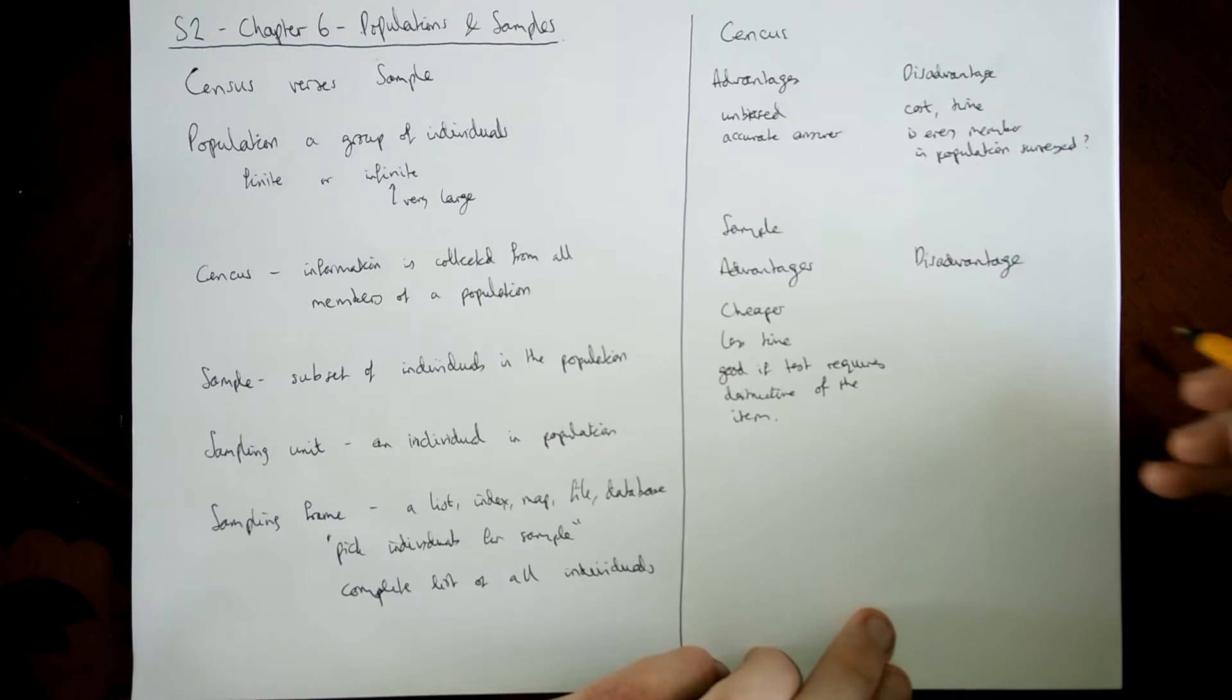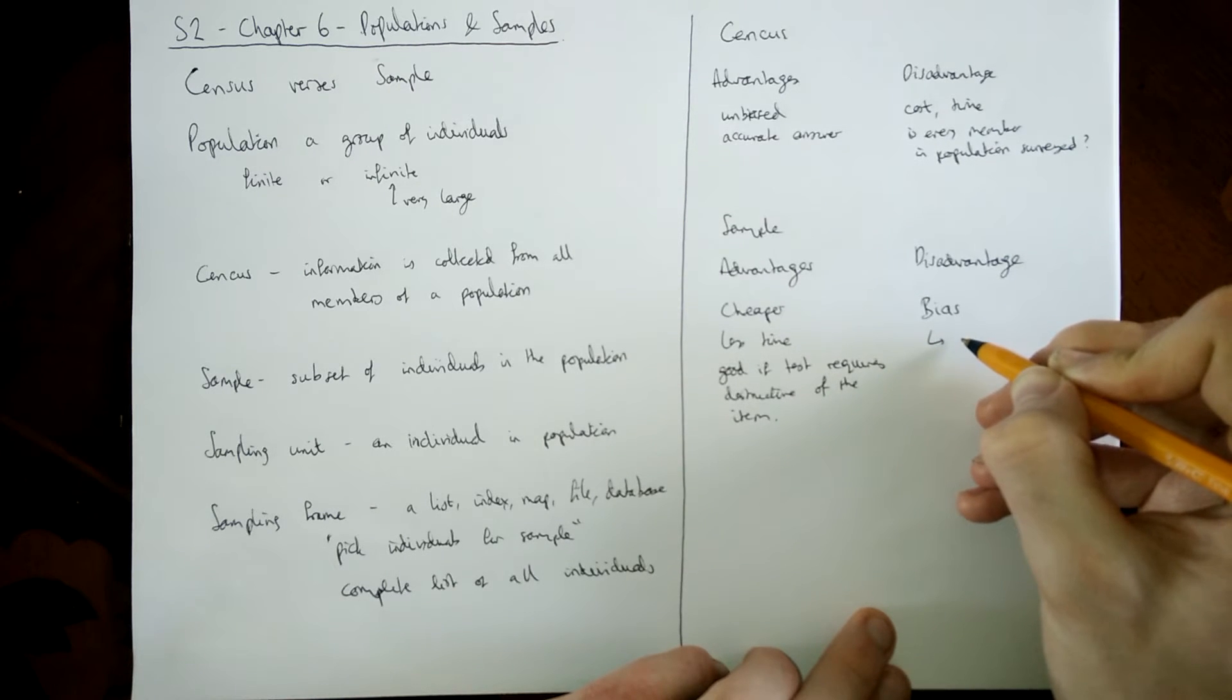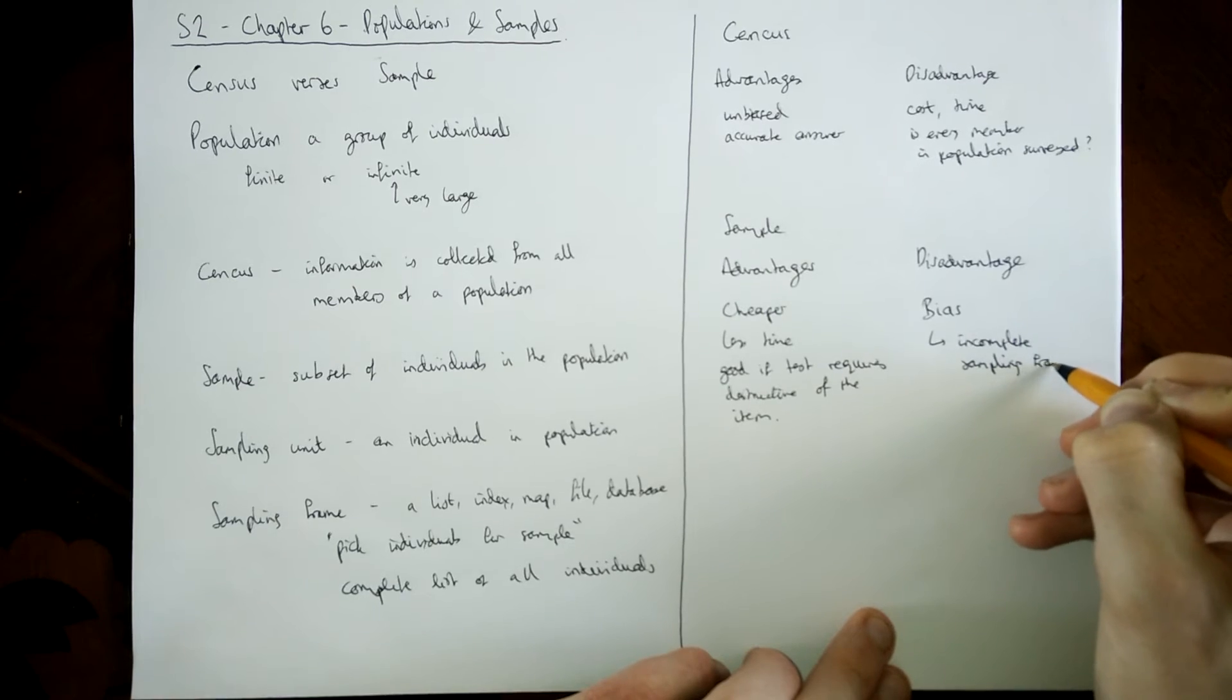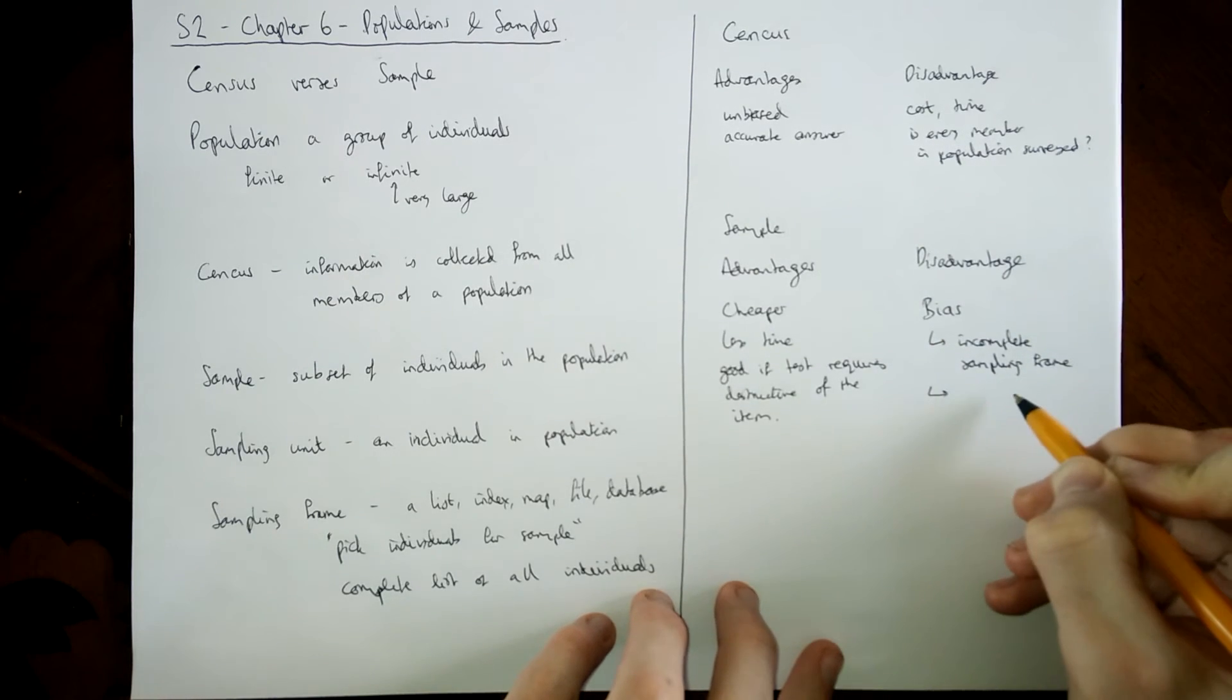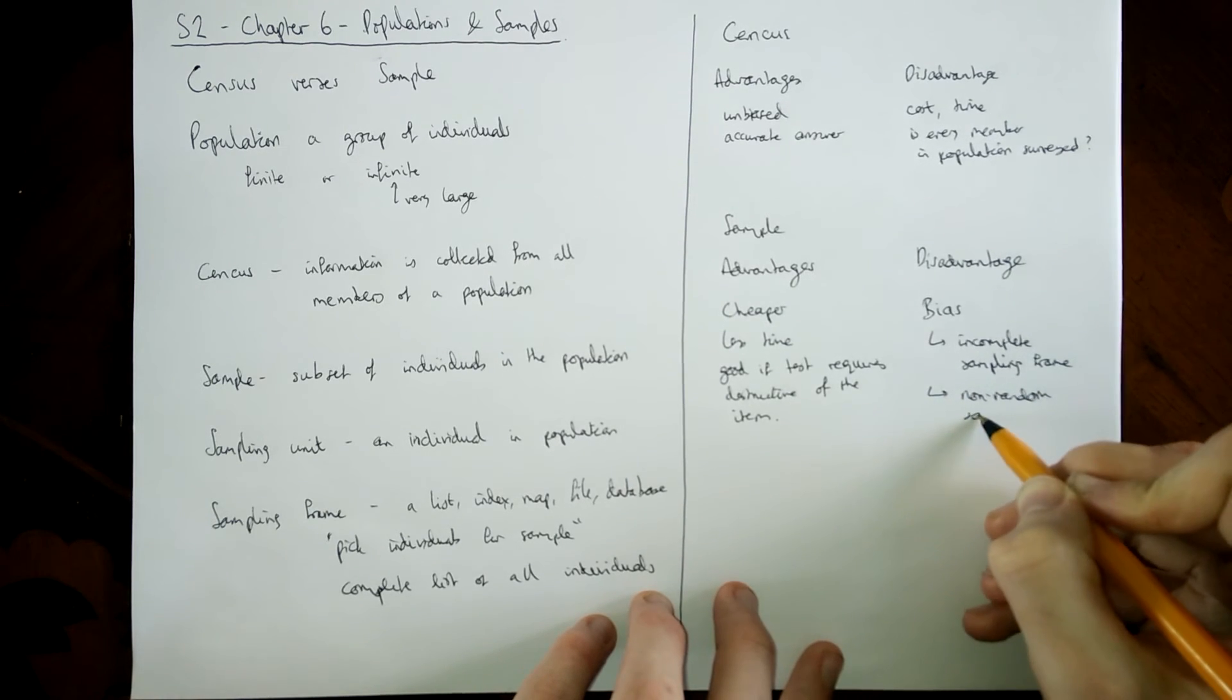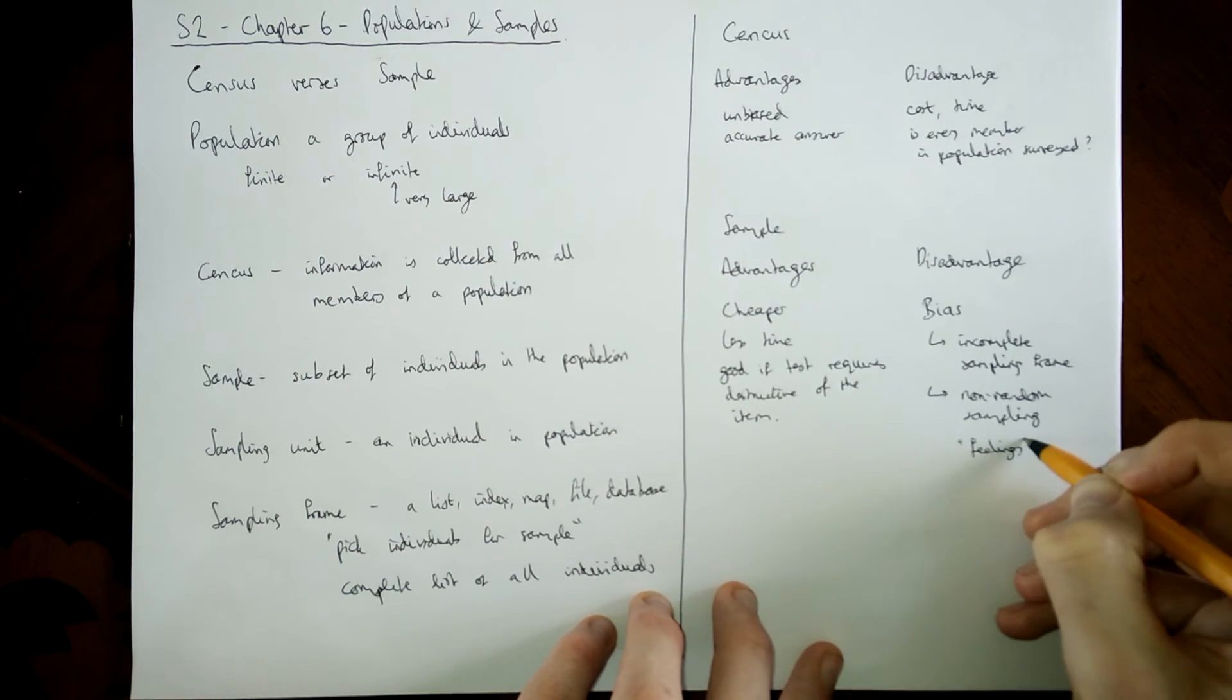Disadvantages? Well, I guess the disadvantages are that there's the potential there for it to be biased. The bias could come from the actual problems with having a sample frame. So if your sample frame is incomplete, if you haven't got every possible individual in the list, some people just couldn't be picked. Then that's going to cause bias because their result is never going to be included in your answer. Another form of bias is that the way you choose your sample creates a bias towards the answer, for example, non-random sampling or if your feelings influence the answer.